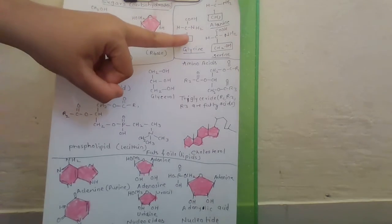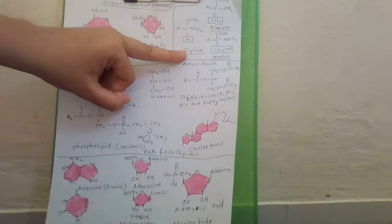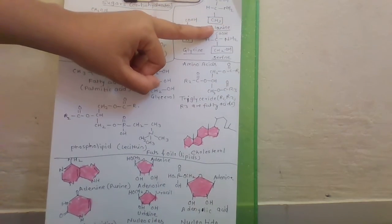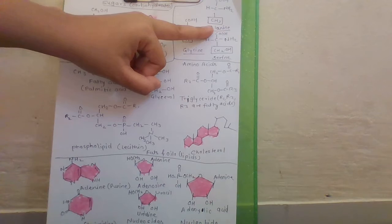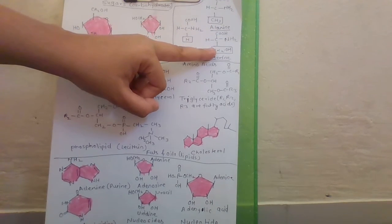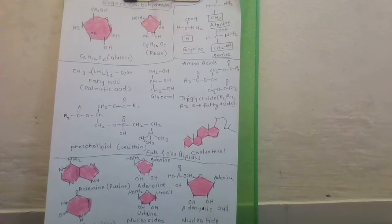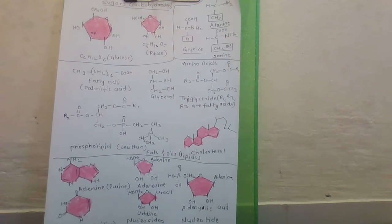Here you have to remember: hydrogen group means glycine, methyl group means alanine, and hydroxymethyl group means serine. Next is fats and oils or lipids.